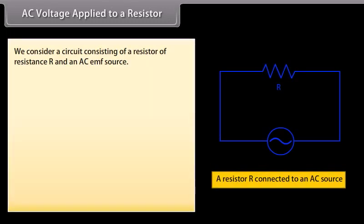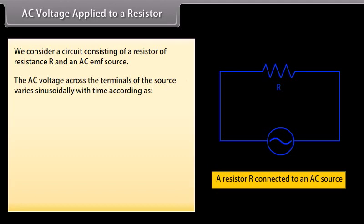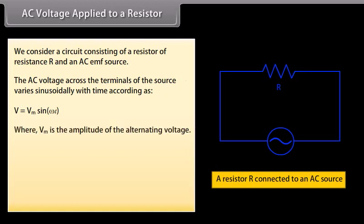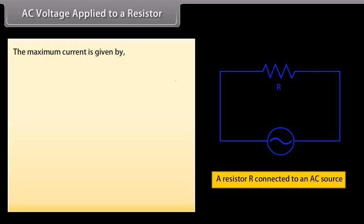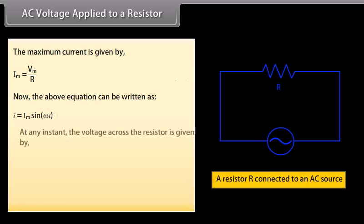AC voltage applied to a resistor: we consider a circuit consisting of a resistor of resistance R and an AC EMF source. AC voltage across the terminals of the source varies sinusoidally with time according as V = Vm sin(ωt), where Vm is the amplitude of the alternating voltage and ω is the angular frequency. We apply Kirchhoff's rule in the loop to get I = (Vm/R) × sin(ωt). The maximum current is given by Vm/R, so the equation can be written as I = Im sin(ωt).